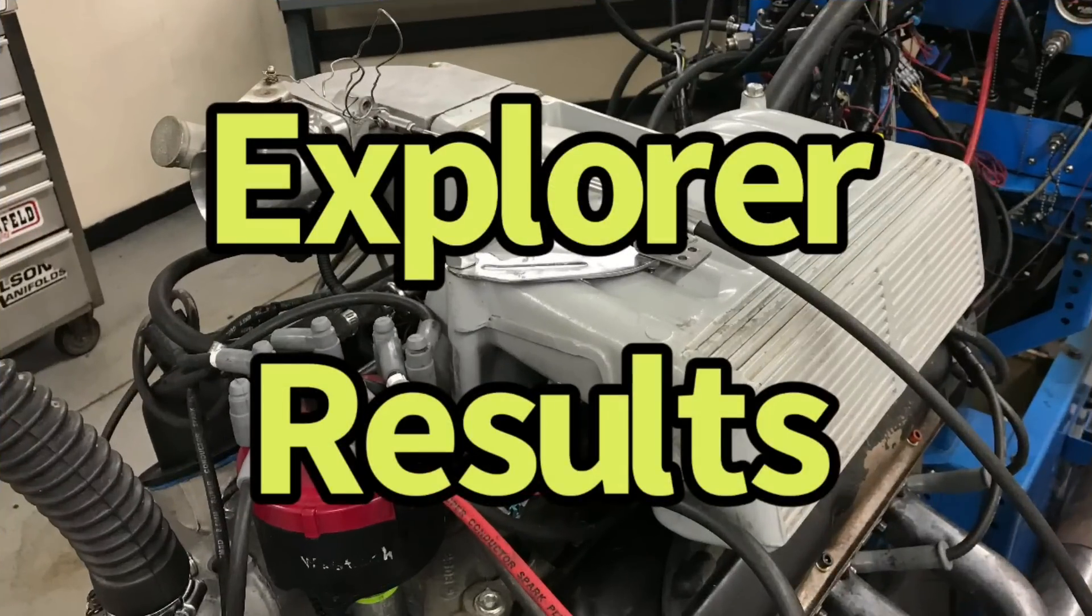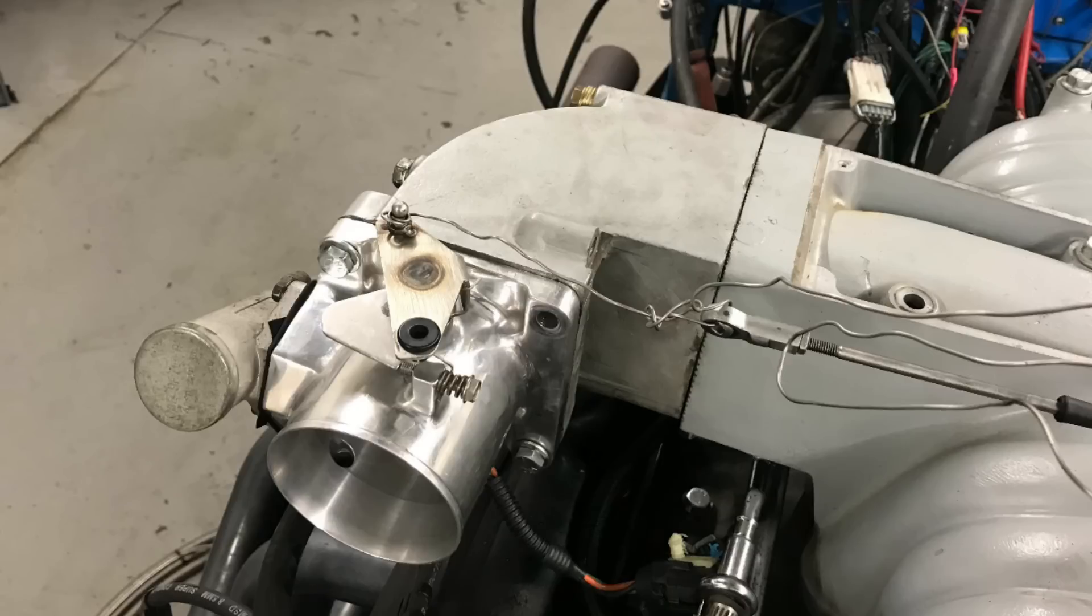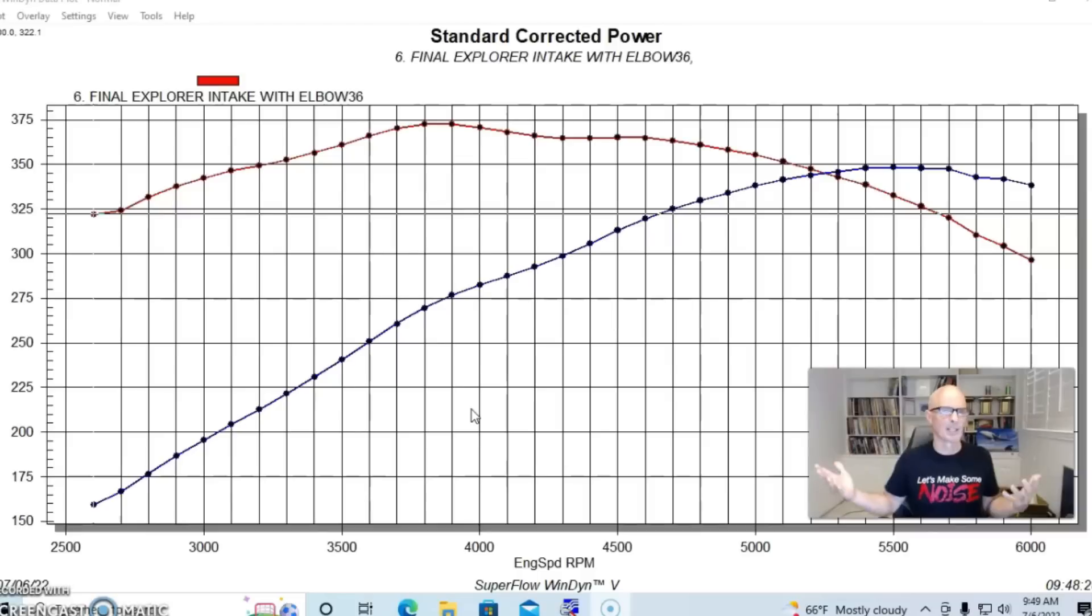Of all the intake manifolds or upper intake manifolds that we compared here with all the GT40 combinations, this one was the one I was most curious about. And more specifically, I was curious about the Explorer intake manifold, which is the one that you could go get as readily available. Some of the others are harder to get and more expensive now. But the GT40, or the Explorer-based version, you can go to the wrecking yard and grab.